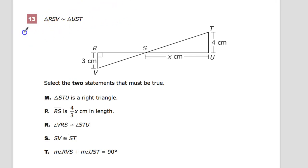So we can say that angle R is congruent to angle U. Angle S is congruent to angle S, which would make sense—they're vertical angles. And then angle V is congruent to angle T.